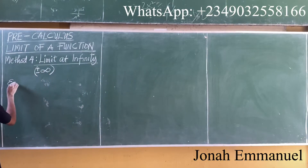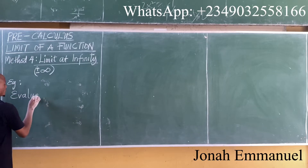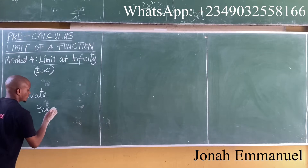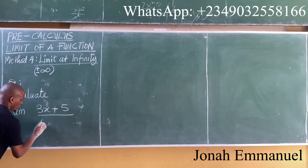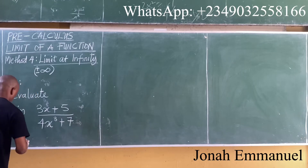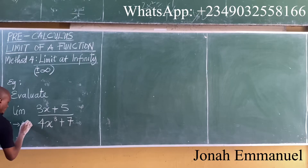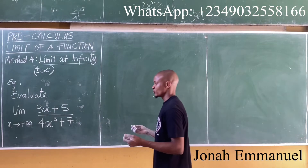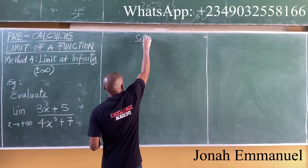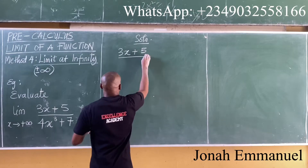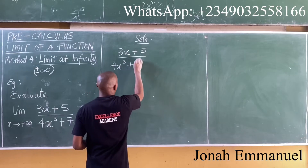Then when you're done with that, take the variable as zero and you get your answer. So let's do an example. We are asked to evaluate the limit of the function (3x + 5) all over (4x³ + 7), taking the limit as x tends to positive infinity. Here's what to do — set up the solution.